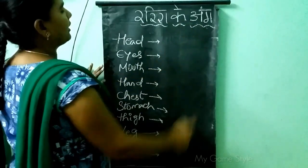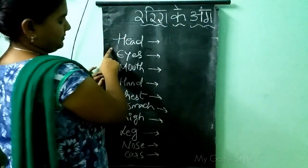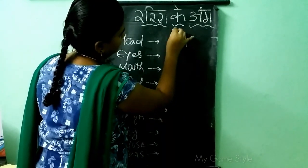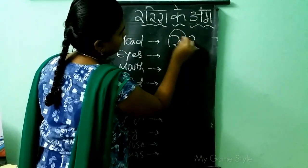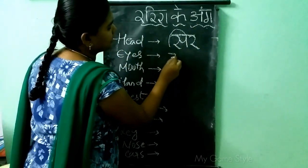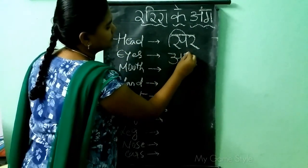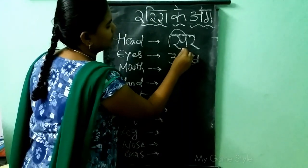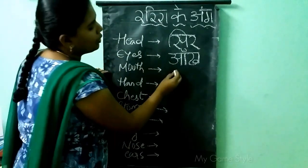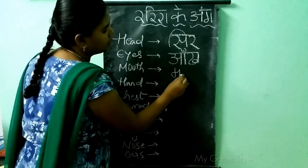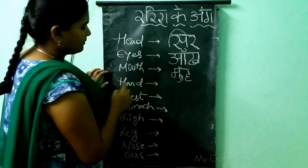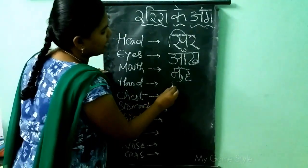Shareer ke Ang. Head — Sir. Eyes — Aank. Mouth — Muu. Hand — Haath.